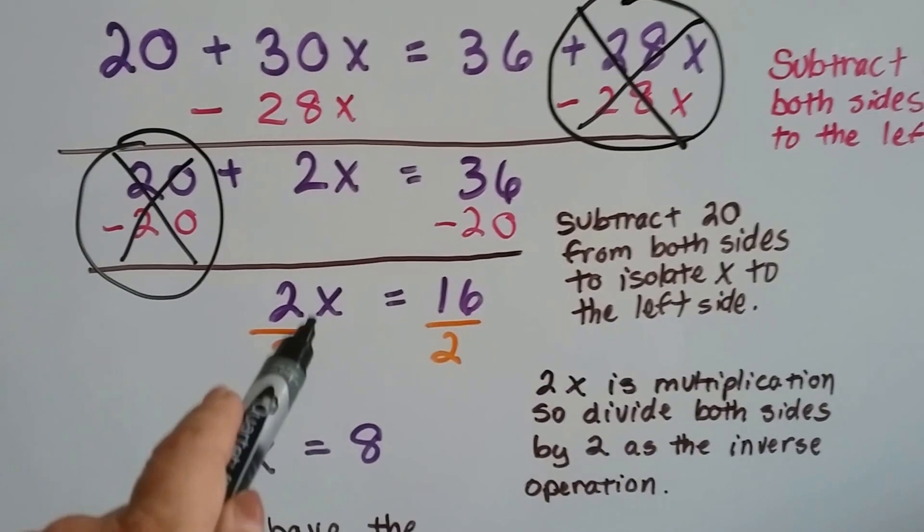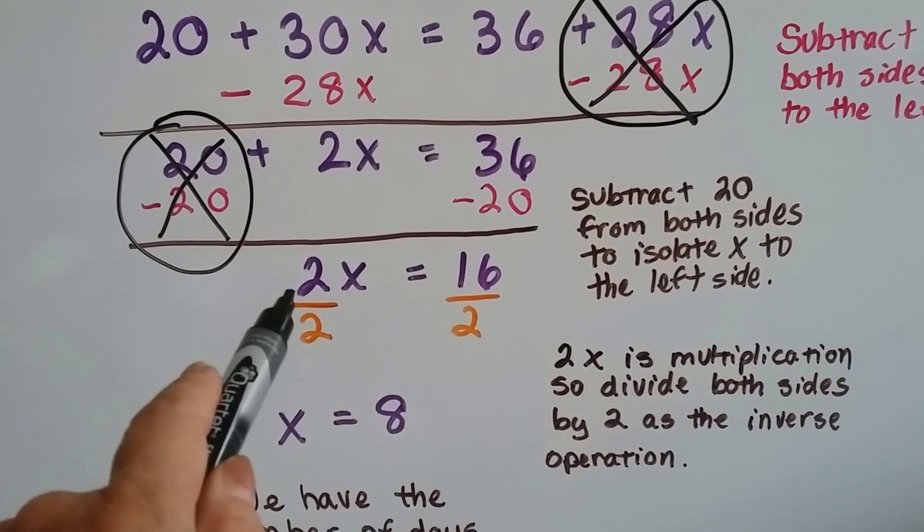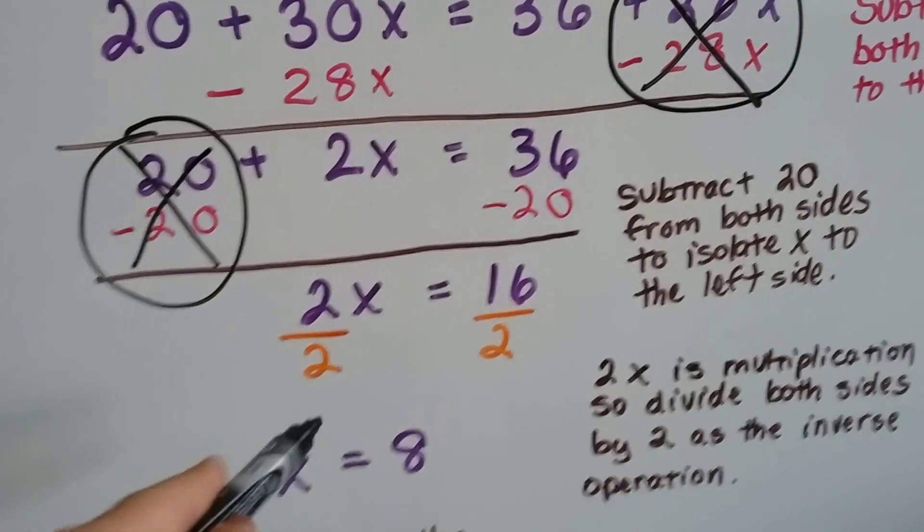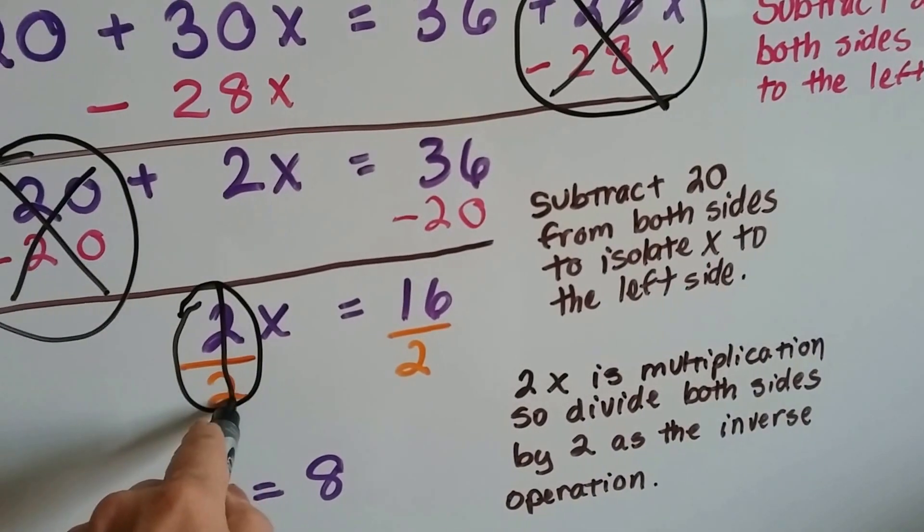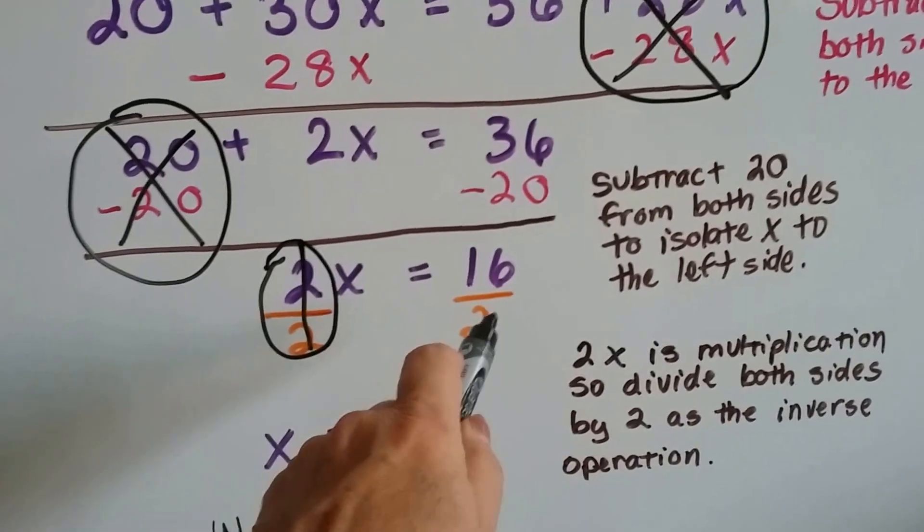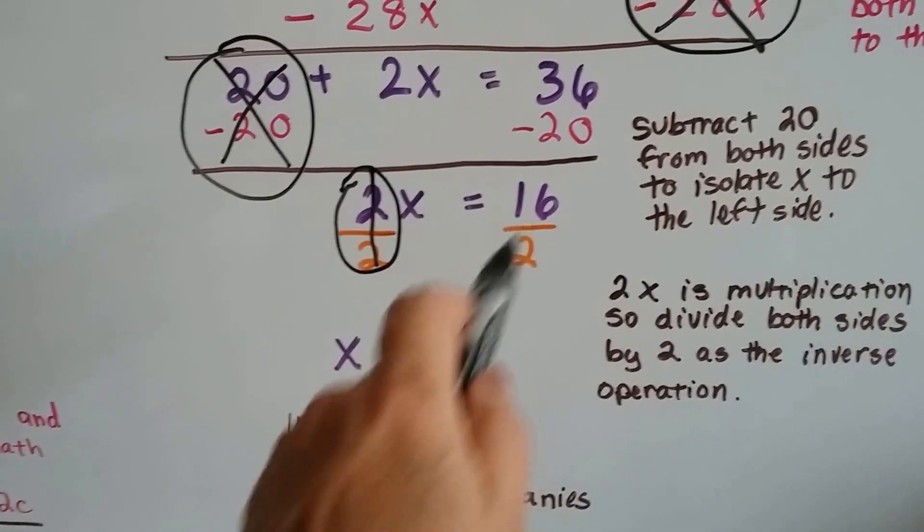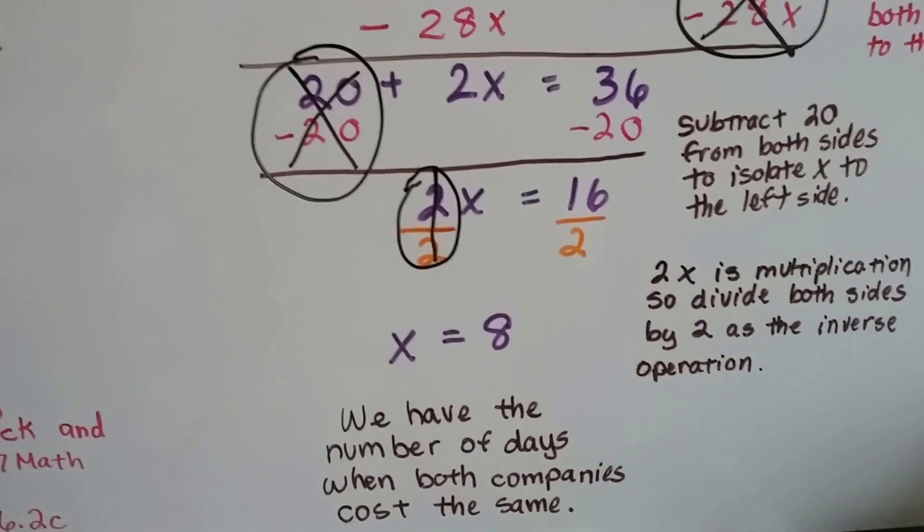Now, because this 2x is multiplication, we're going to divide both sides as the inverse operation. We're going to divide 2 by 2, and what happens is this creates our invisible 1. 16 divided by 2 is 8, and we've got x equals 8. So we have the number of days when both companies cost the same, at the 8-day mark.